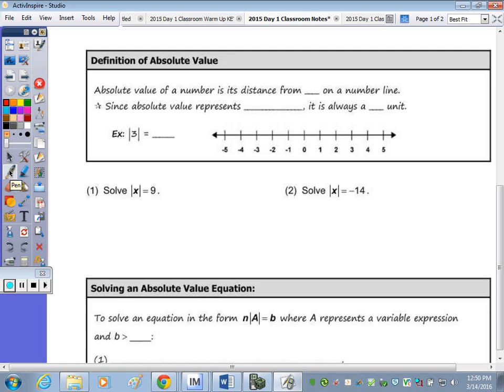We talked about during the warm-up, the definition of absolute value is at the top of your page. We talked about the definition stating that absolute value is distance, and that distance is how far the number is away from zero. Since absolute value represents distance, it's always a positive unit.